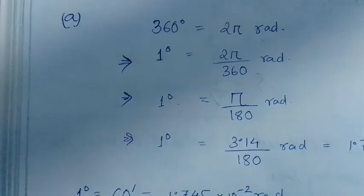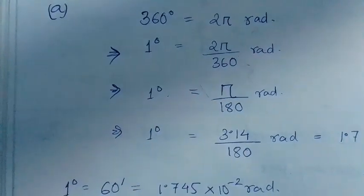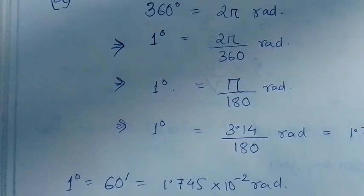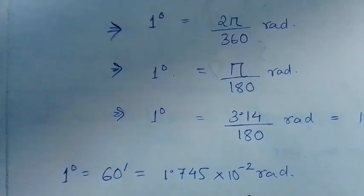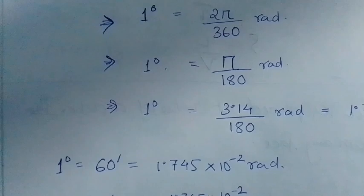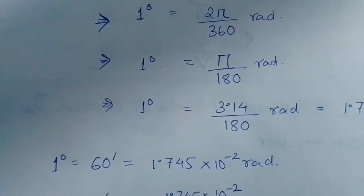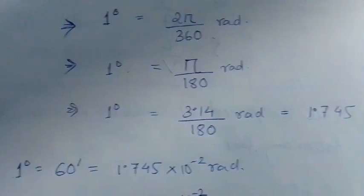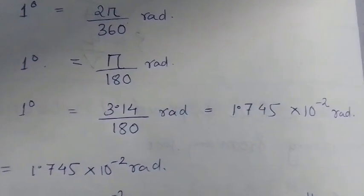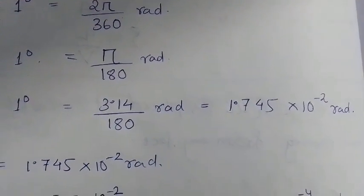If we write 1 degree will be π by 180 radians. Placing the value of π to be 3.14 divided by 180 radians, we can obtain this radian to be 1.745 into 10 to the power minus 2 radians.